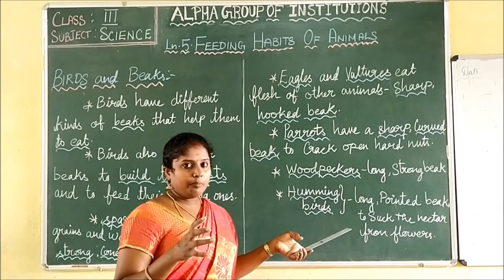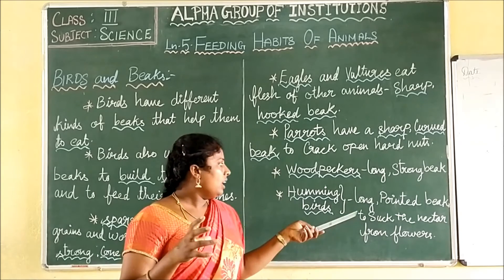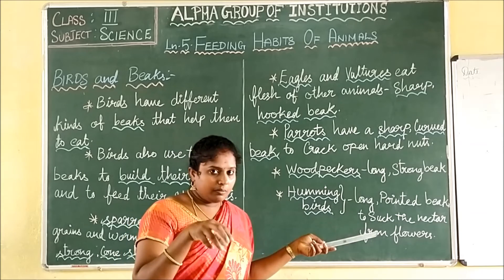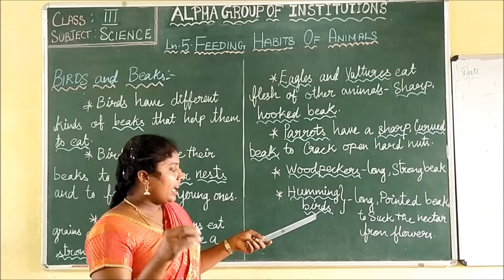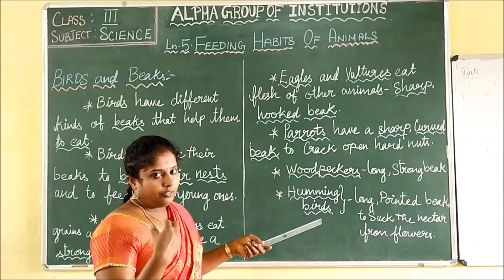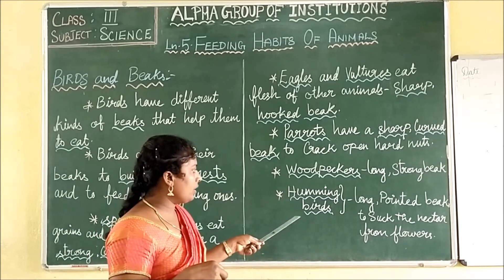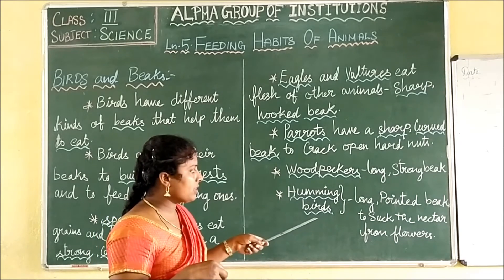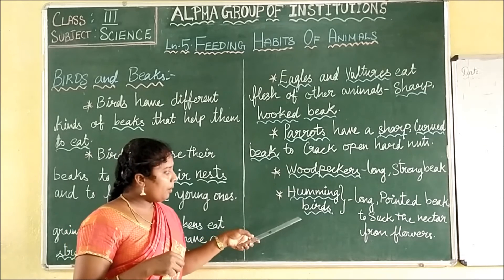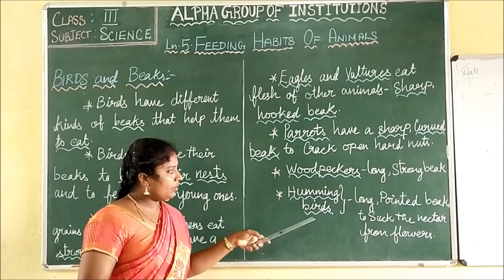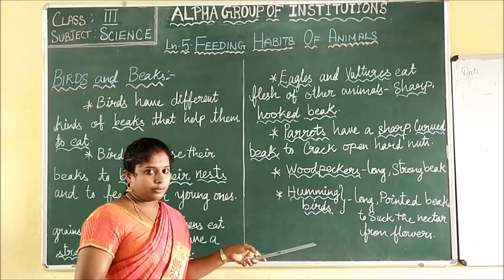Then, hummingbirds. Hummingbirds — what will they do? They will be having a long pointed beak to suck the nectar from the flower. To suck the nectar from the flower, hummingbirds will have a long and pointed beak.